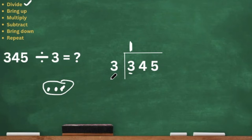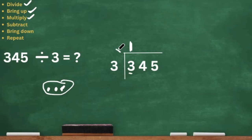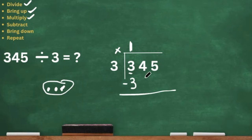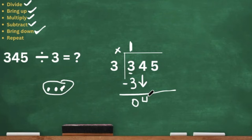So 3 divided by 3 is 1. We brought the 1 up because in the CFS it says to bring up. Now we have to multiply. We're going to multiply 1 times 3. We put our multiplication symbol here because we have to multiply the top number by the divisor. So 1 times 3 is 3. Next we're going to subtract — 3 minus 3 is 0. Then we're going to bring down that next digit in our dividend, so we bring that 4 down.